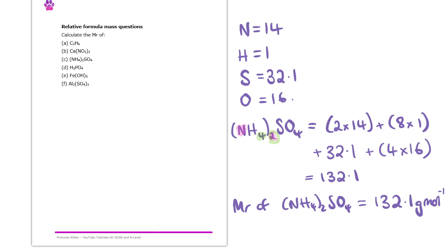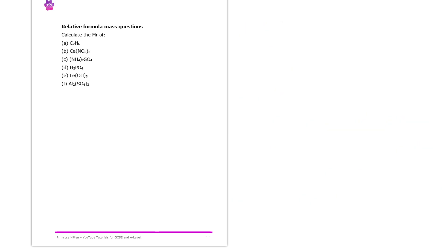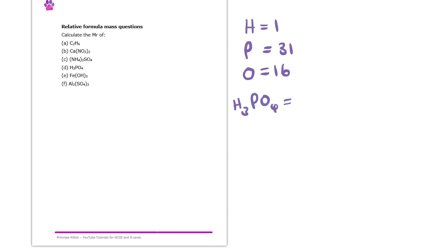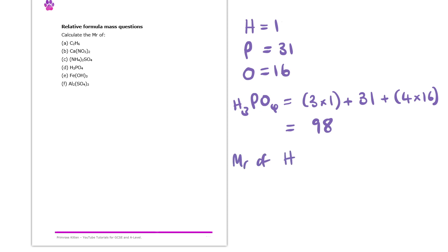Question D is phosphoric acid. Hydrogen has a mass of 1, phosphorus has a mass of 31, and oxygen has a mass of 16. The formula H₃PO₄ has no brackets, so we do three times 1, plus 31 for the phosphorus, plus four times 16 for the oxygens. Putting that into the calculator gives a mass of 98, so the Mr of phosphoric acid is 98 grams per mole.